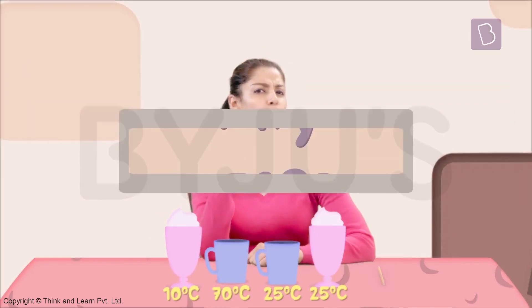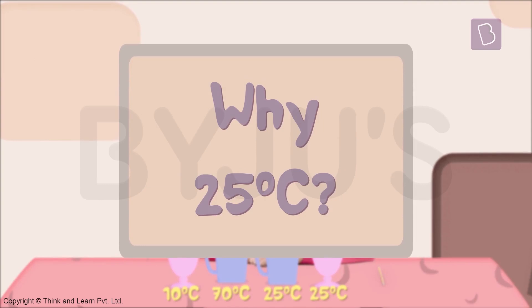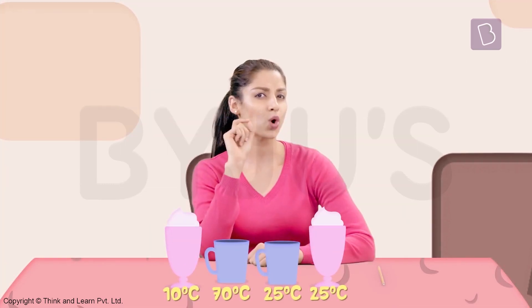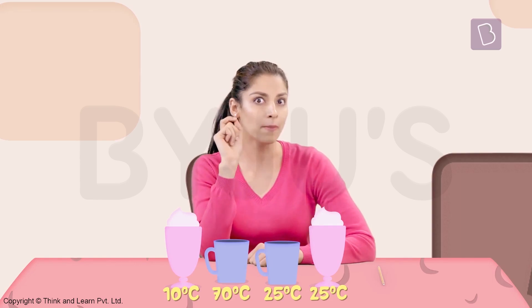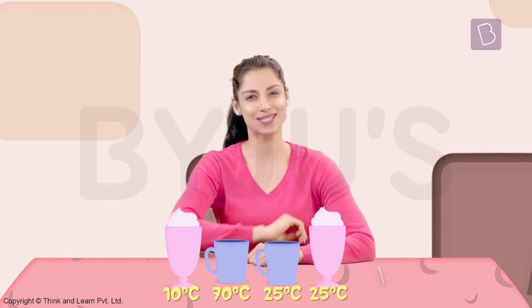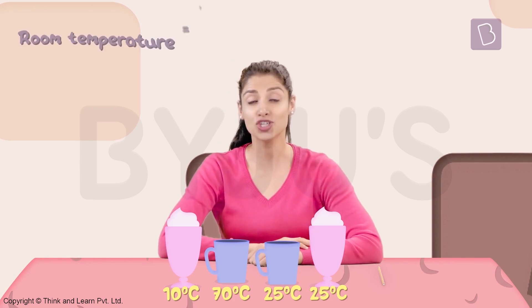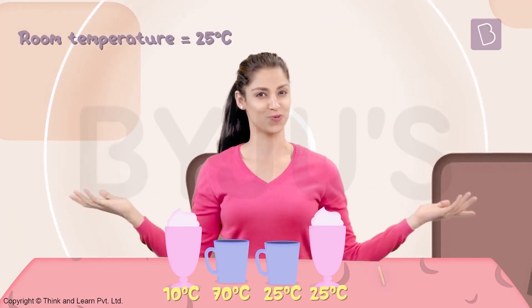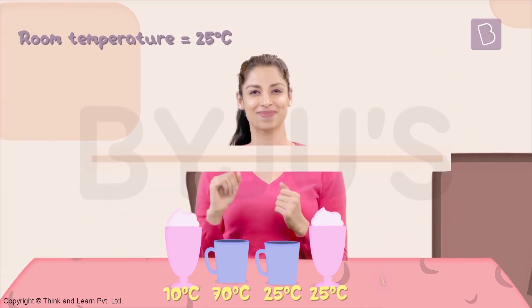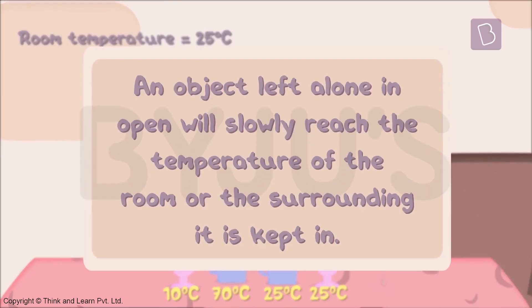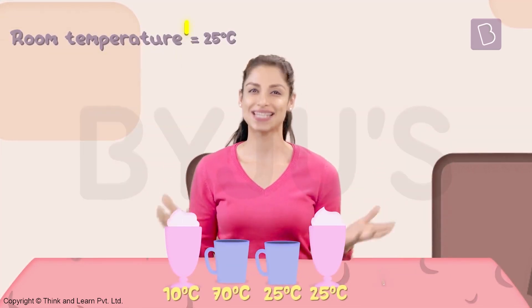But why 25 degrees? Why did the coffee cool down and the milkshake warm up to 25 degrees? That is because it is the temperature of this room. An object left alone in the open will slowly reach the temperature of the room or the surrounding it is kept in. We call it room temperature.